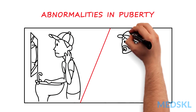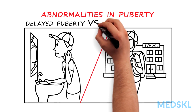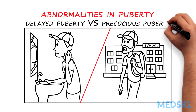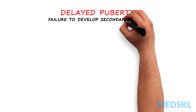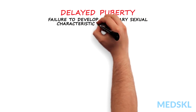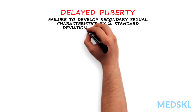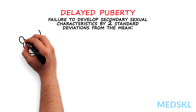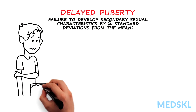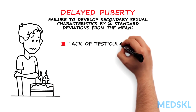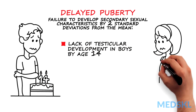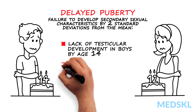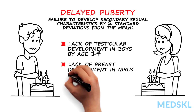Abnormalities in pubertal development are discussed from the delayed and precocious perspectives. Delayed puberty is defined as failure to develop secondary sexual characteristics by two standard deviations from the mean — in males, a lack of testicular development by age 14, and in females, a lack of breast development by age 12.